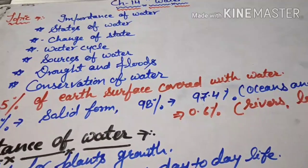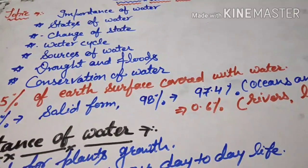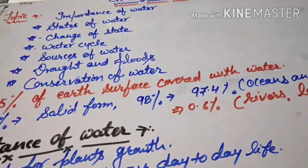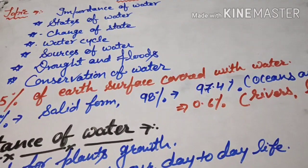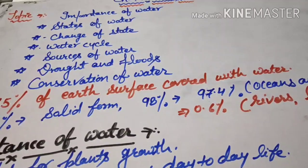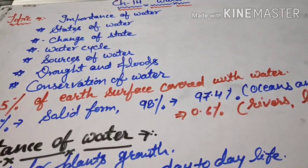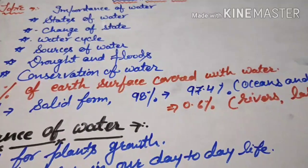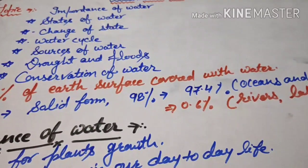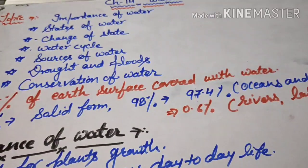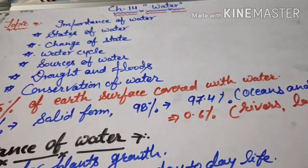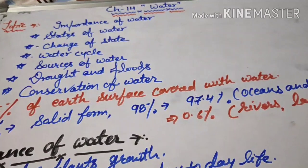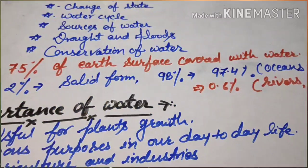You know how important water is for us. All living beings need water to survive. All living organisms, whether plants or animals, need water. The relationship between life and water is very close. Without water we cannot survive — no plant, animal, or microorganism can live without water.